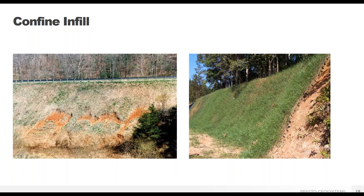The GeoWeb works in multiple ways to protect slope surfaces. It prevents significant movement of the soil by confining it to individual cells. By separating the soil into smaller chunks, the system resists mobilization of the entire slope face due to hydraulic loads and prevents soil erosion. Proper installation of the GeoWeb includes embedding the GeoWeb into the crest of the slope, which prevents water from flowing beneath the GeoWeb and undermining the system, so no rills or gullies will form underneath.